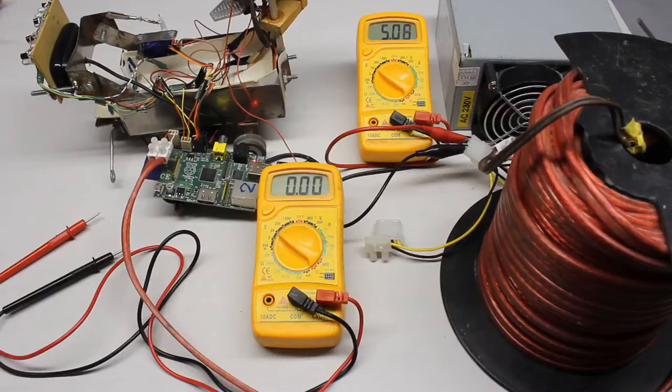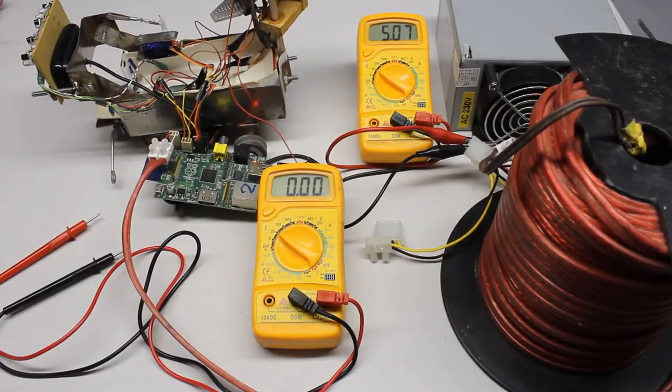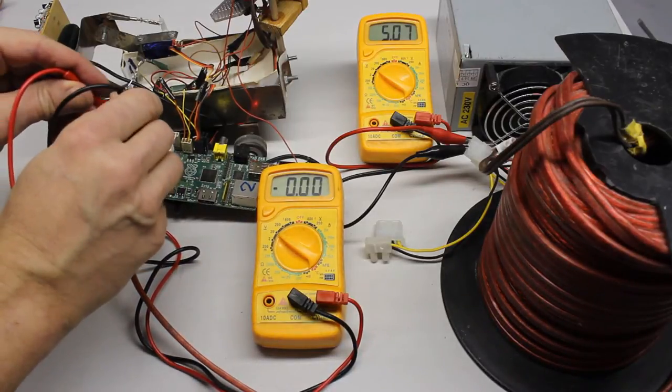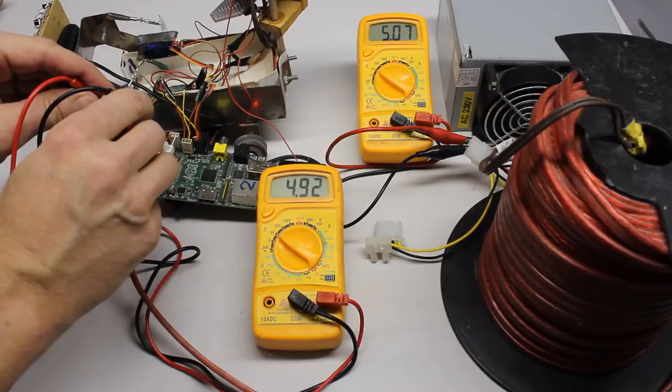In order to reduce the voltage drop across the feed line, cables with a larger diameter have to be used. Now, the decline in potential is just 0.15V even when using clearly longer cables than before.